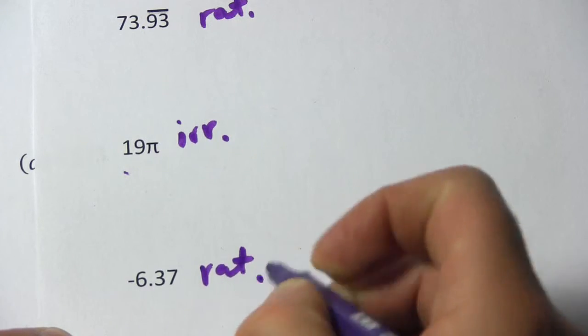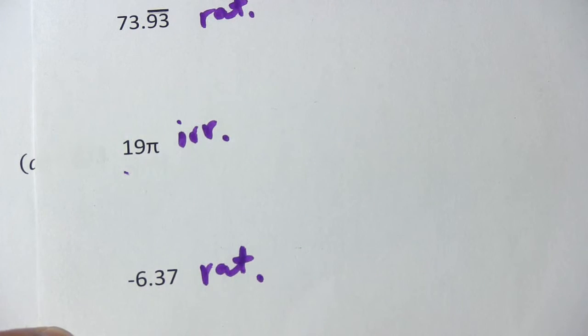And then finally, we have negative 6.37, that is a plain old rational number. So that's a little bit of work in identifying rational and irrational numbers.